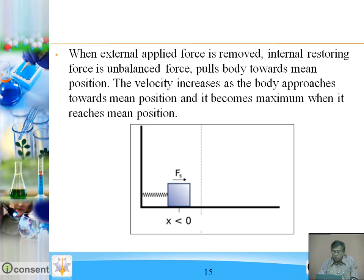When the external applied force is removed, the restoring force is the only unbalanced force and it pulls the body towards the mean position. But at the mean position, due to inertia — the property of maintaining state or opposing change — the block moves towards the left. When the spring is compressed, the restoring force opposes the compression and acts in the right-hand direction. When both forces become equal, there is an equilibrium position, and the block again moves towards the mean position.